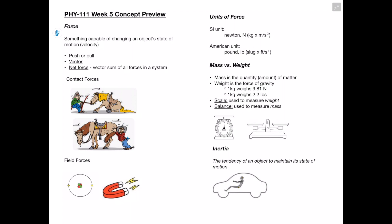In this video we're going to be going over the week 5 concepts for Physics 111. Starting off with the definition of force: a force is something capable of changing an object's state of motion, so we can think of this as a push or a pull. A force is a vector quantity, so it has both a magnitude and a direction. Net force is equal to the vector sum of all the forces in the system.